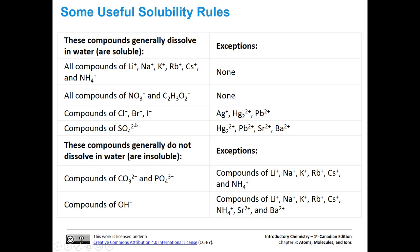If you have compounds with chloride, bromide, or iodide anions, those are going to be generally soluble. But if they happen to be paired with silver, mercury, or lead, they will not be soluble. So find the general rule - generally soluble - but if paired with those cations, they are insoluble. Same with sulfate: generally soluble, but if it's with mercury, lead, strontium, or barium, then it's going to be insoluble.